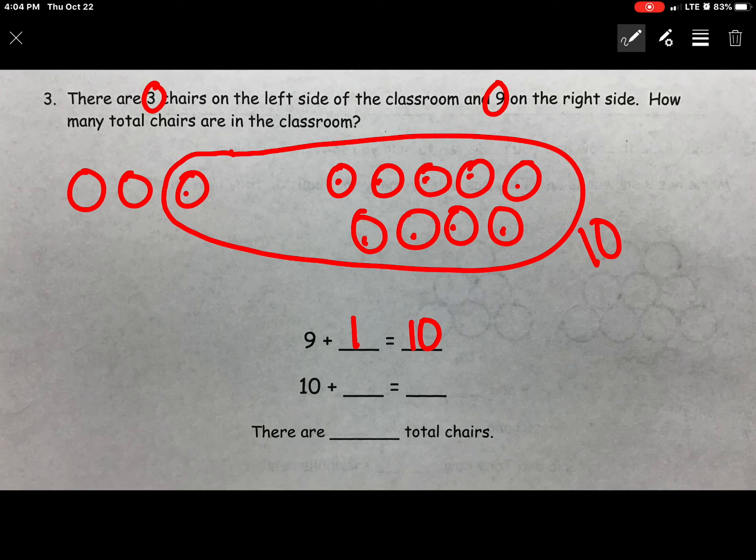There are 2 that are not in my circle. 1, 2, I'm going to label that as 2. Down here I will write 10 plus 2 equals 12. There are 12 total chairs.